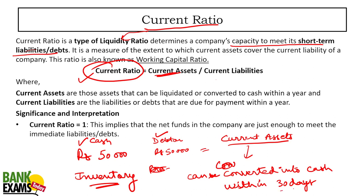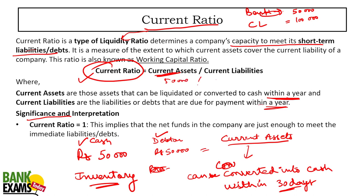The thumb rule is 30 days, but in certain books the definition is within one year. Different books give different definitions — some say 30 days, some say one year. Interpretation is very important. For example, if your current assets are 50,000 rupees and your current liabilities are 1 lakh rupees, your current ratio is 0.5, which is not good — you are not able to meet your short-term liabilities.